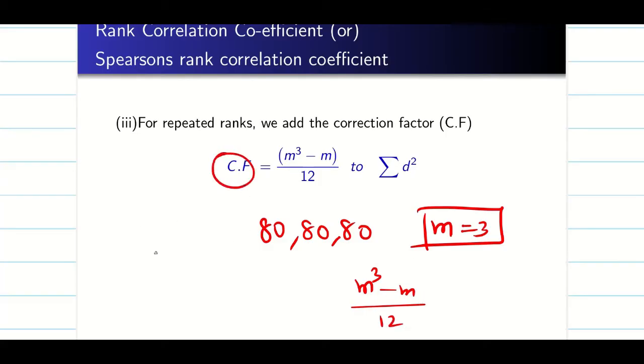In the same problem, if I have more repeated values, I am going to take it as correction factor 1, correction factor 2, correction factor 3, etc. And I am going to find all the correction factors and add with d square.